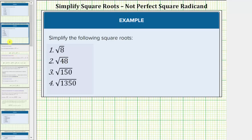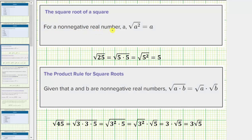In the previous lesson we learned that for a non-negative real number a, the square root of a squared is equal to a. For example, the square root of twenty-five equals the square root of five times five, which equals the square root of five squared, which simplifies to one factor of five. This simplified perfectly because twenty-five is a perfect square. But again, the square root will simplify as long as it contains perfect square factors.